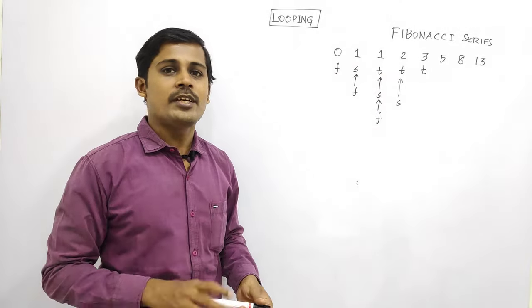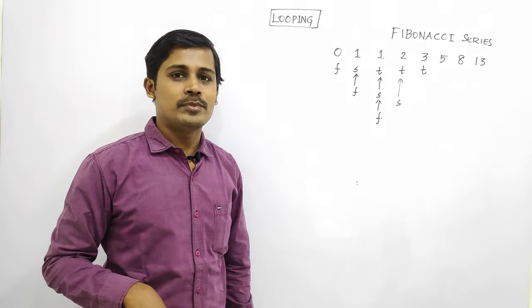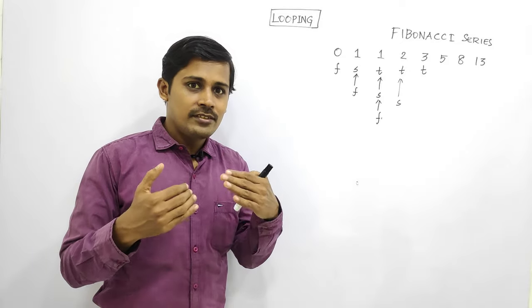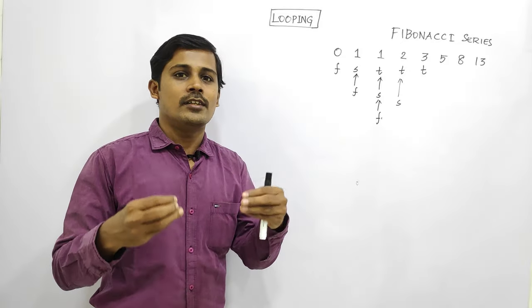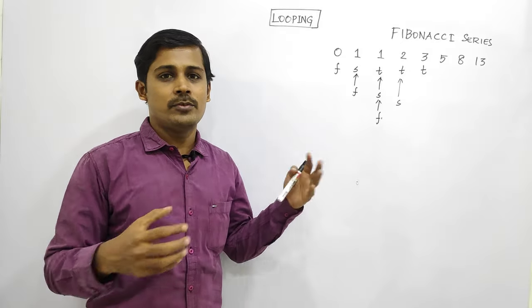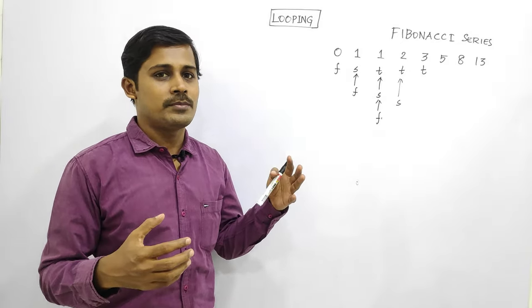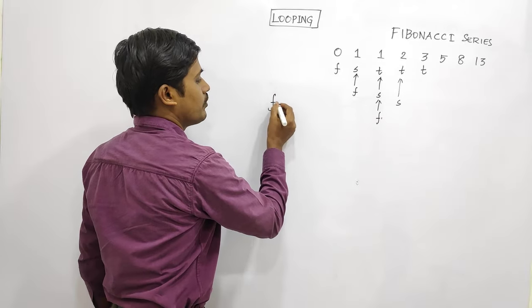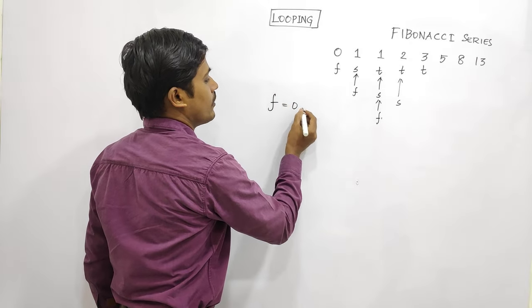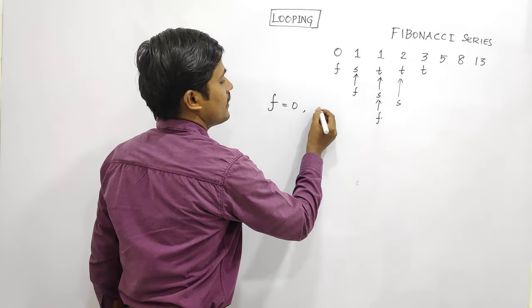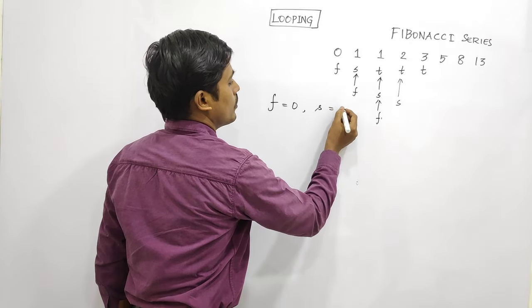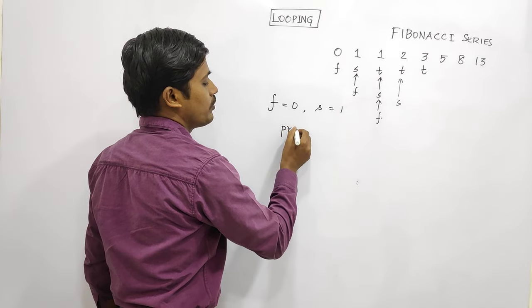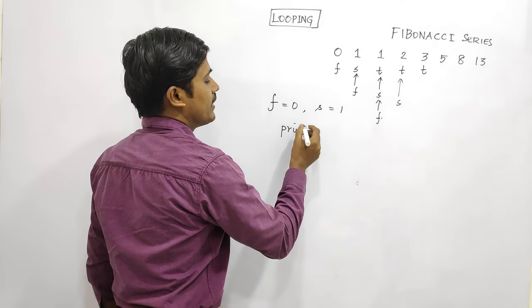How do you do this Fibonacci series program? Let's see. We can do the Fibonacci series program. First number is zero. Second number is one. If you add to get the third number, that's fine. Now let's print it — what do you print?